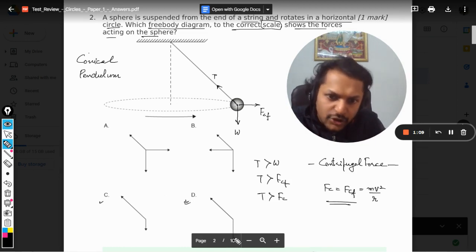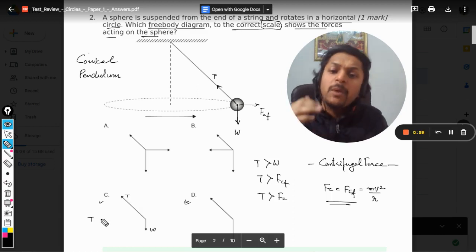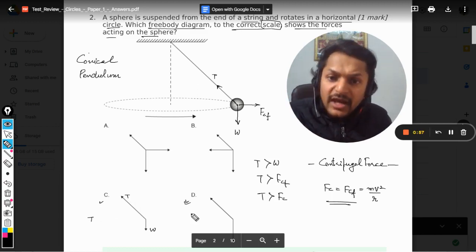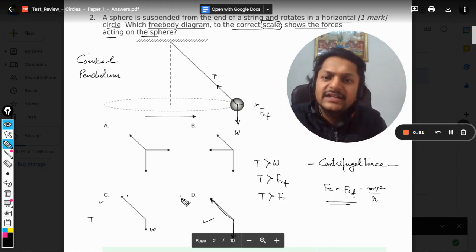Now in C, you see the downward force - that is weight - and this is tension T. So tension T is much larger than weight. And in D, it's not that larger, but definitely larger. So I think this is the correct answer - D is the correct answer.